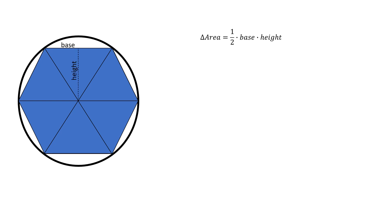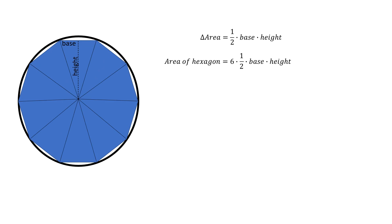The base is going to be one side of the triangle, and then the height is going to be from the center out to the side. That's how you find the area for one of these triangles. But there are 6 of these triangles. So to find the area of the hexagon, we're going to take one half times base times height and multiply it by 6.